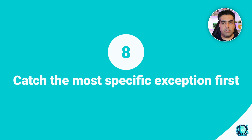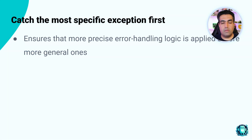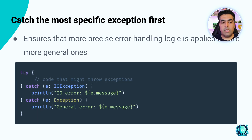Number eight: catch the most specific exception first. When you handle multiple exceptions, always catch the most specific one first. This ensures that more precise error handling logic is applied before more general ones. For example, catching the specific IOException first allows you to address particular error conditions with appropriate recovery actions, such as handling file-related errors differently than other types of exceptions.